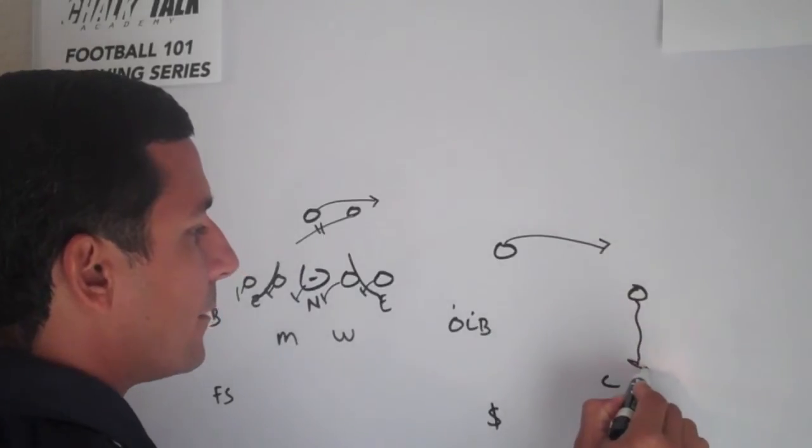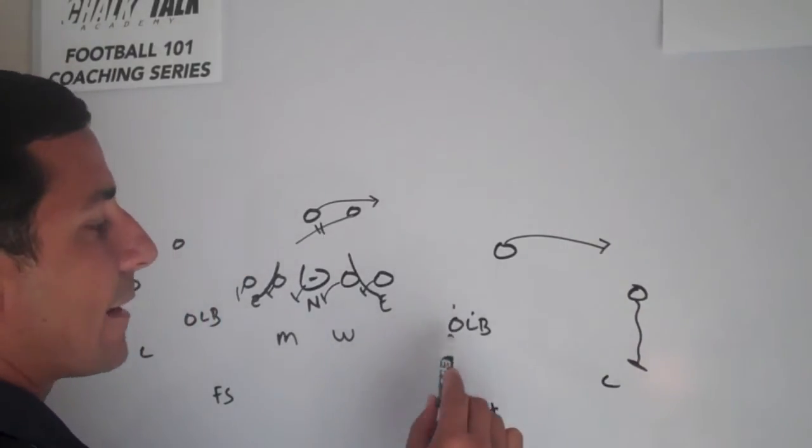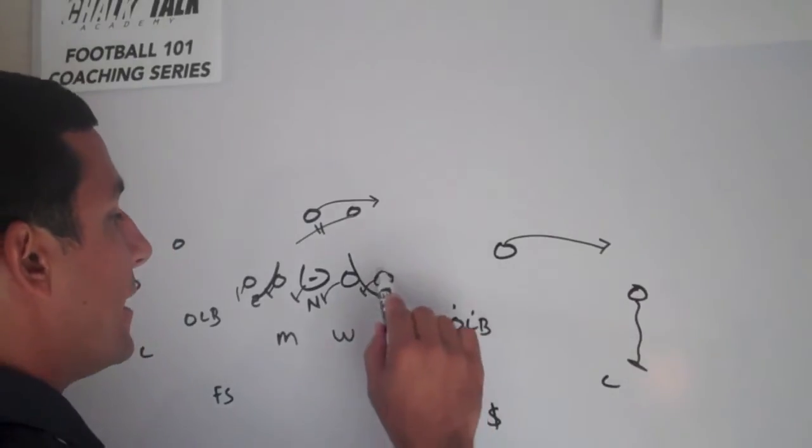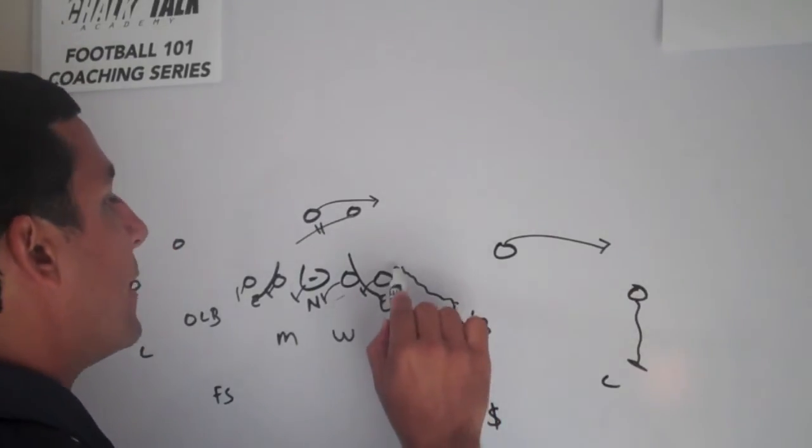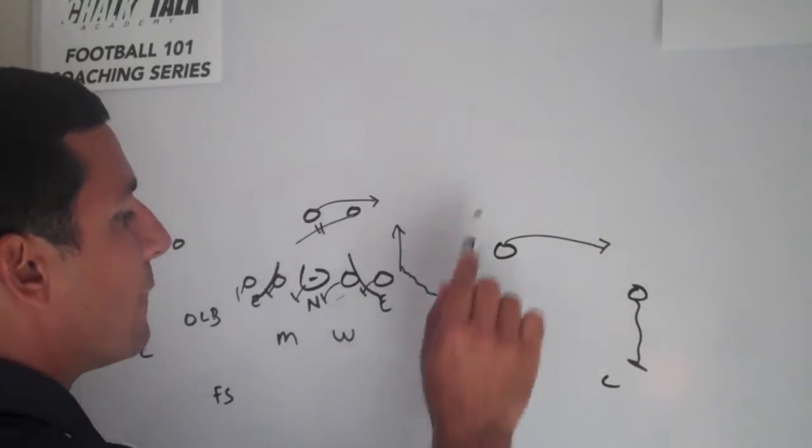This guy's going to come out and block. Right here, the same thing we talked about. He's the apex player. His V goes down. His triangle, he's going to come up into that C gap. He's going to now attack the quarterback, forcing the throw.